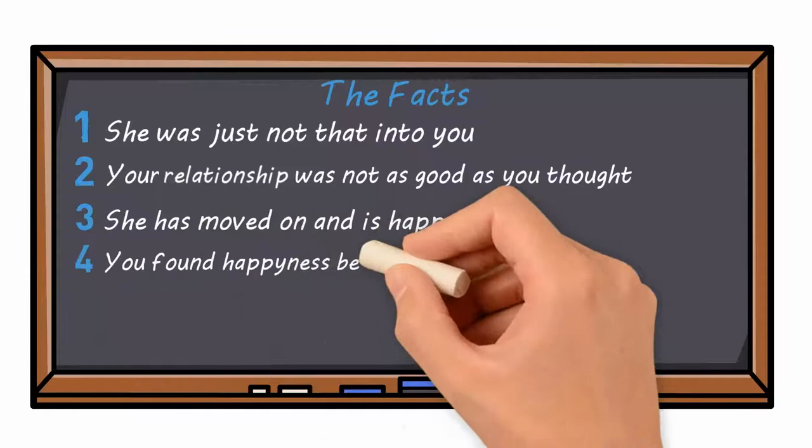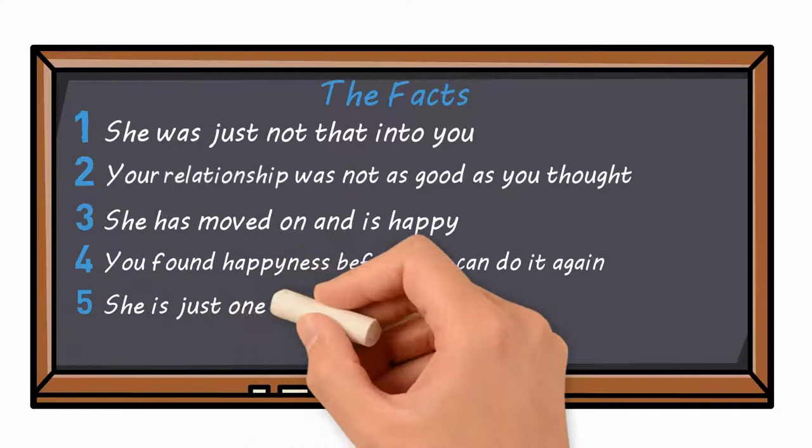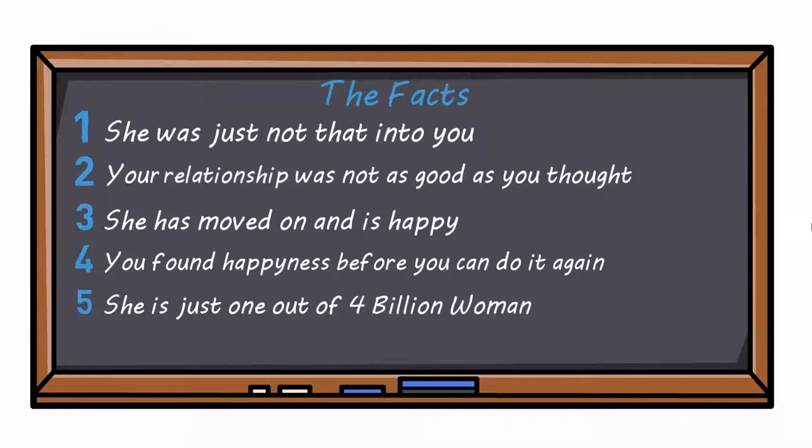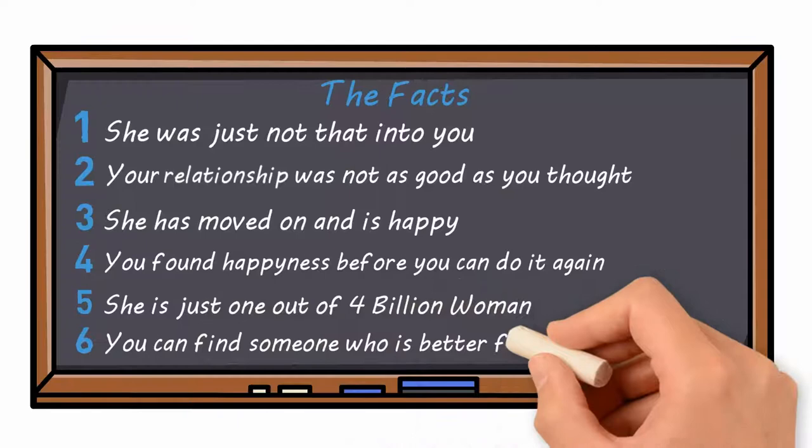Number four: you've found happiness before, you can do it again. Number five: she is just one out of four billion women. For Mark, she's absolutely special. And he's sure he will never find someone like her. Number six: you can find someone that is better for you than her. These are just some obvious facts that we can clearly see, but Mark can't see them.